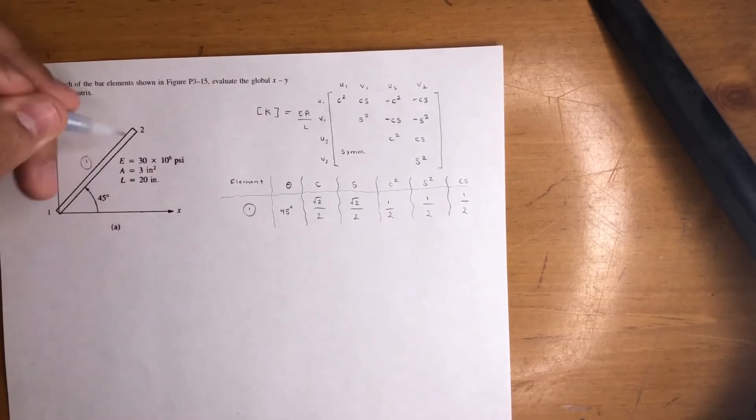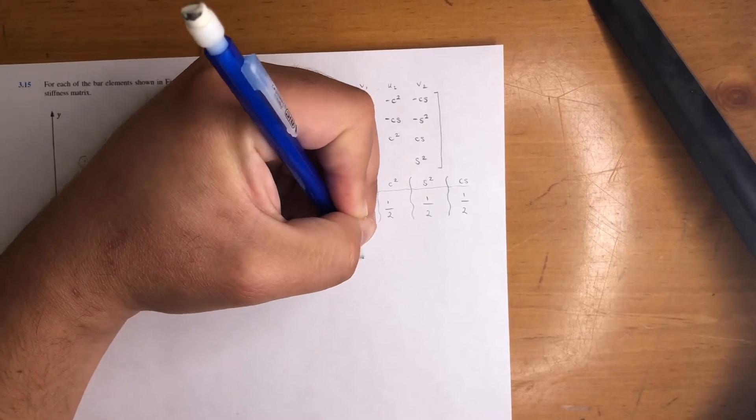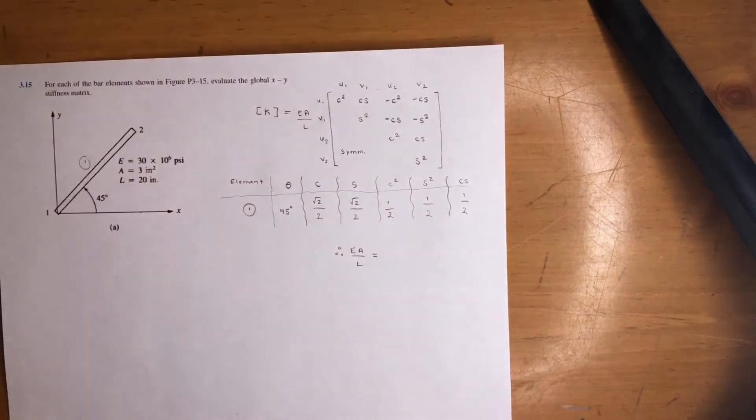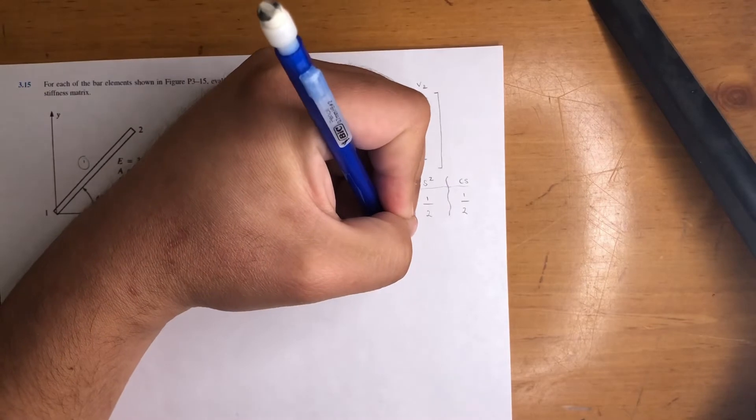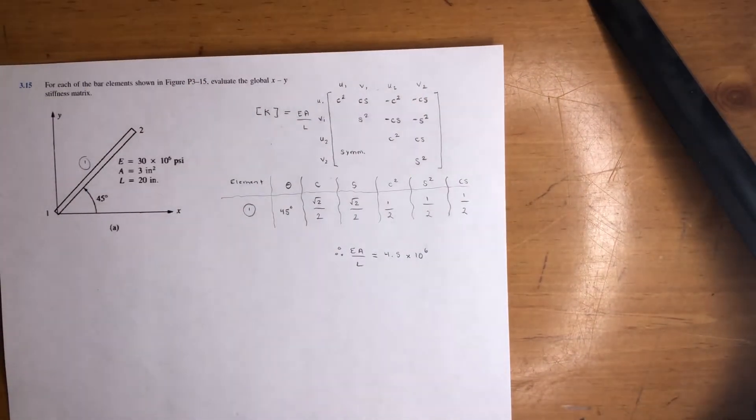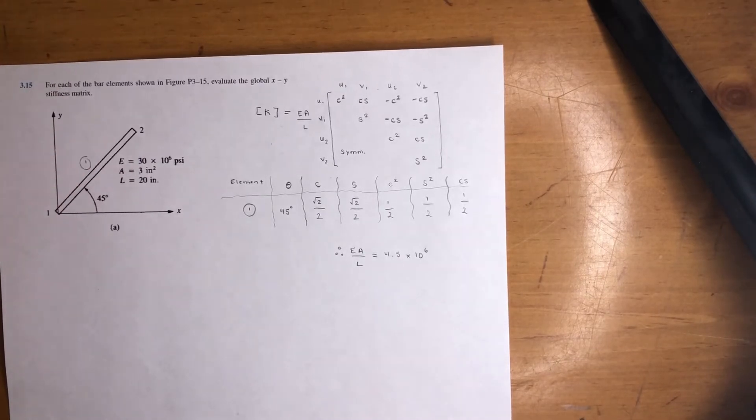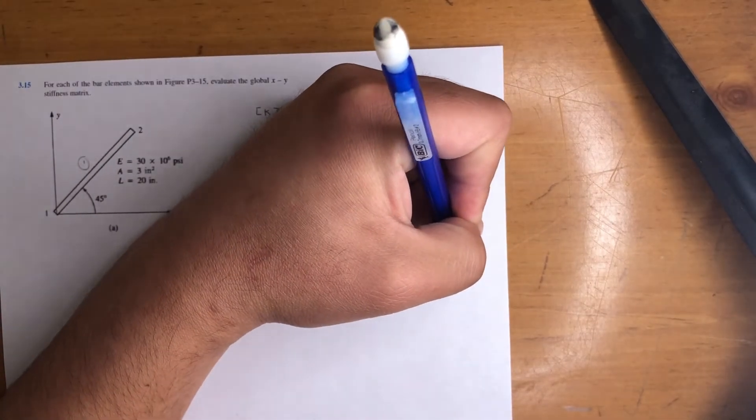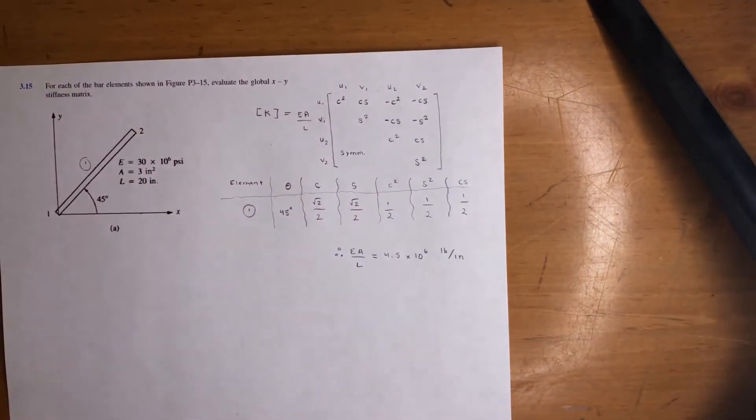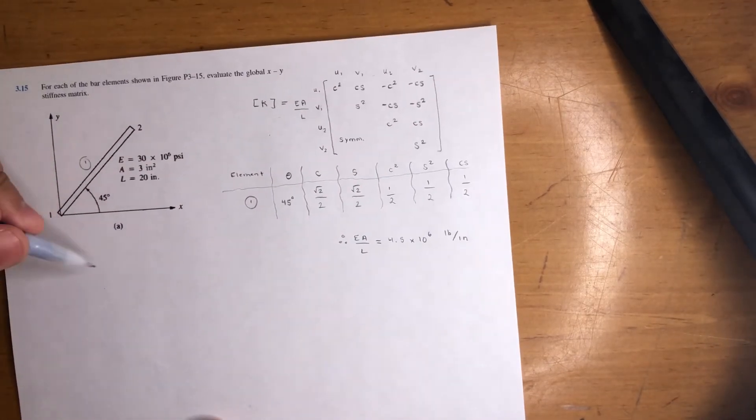In this case, they give it to us right here. EA over L equals 4.5 times 10 to the 6. It's EA, which is 90, divided by 20—that's 4.5 times 10 to the 6 in pounds per inch. It's a stiffness, so it should be pounds over inch. Now we can go ahead and plug and chug.